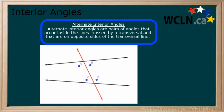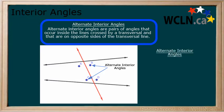When looking at these interior angles, we call pairs of angles that occur inside the lines crossed by the transversal and on opposite sides of the transversal, alternate interior angles. There are two pairs of alternate interior angles here: A and D, and B and C.